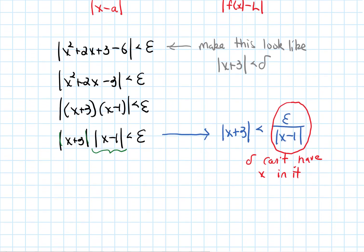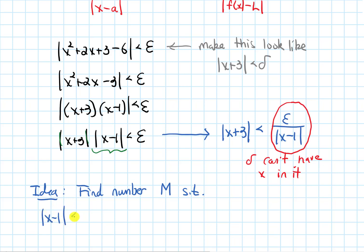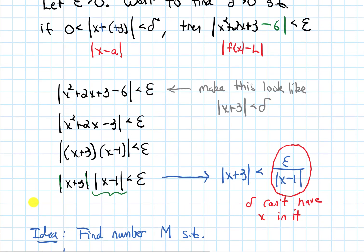So the motivating idea is: we are going to try to find a number m such that the absolute value of x minus 1 is less than m. We want to know the biggest the absolute value of x minus 1 can be, and then once we know that, we can guarantee the whole left-hand side will be less than epsilon, because the absolute value of x plus 3 will be less than delta, and we get to pick delta small enough.